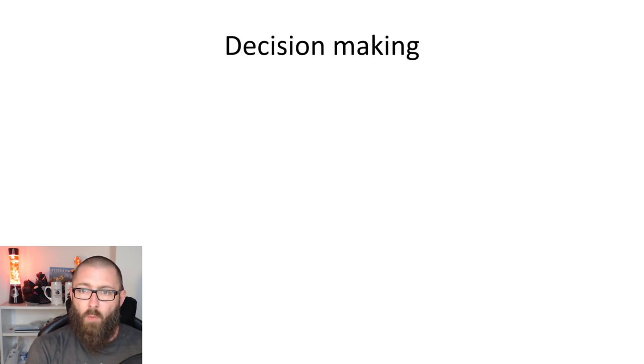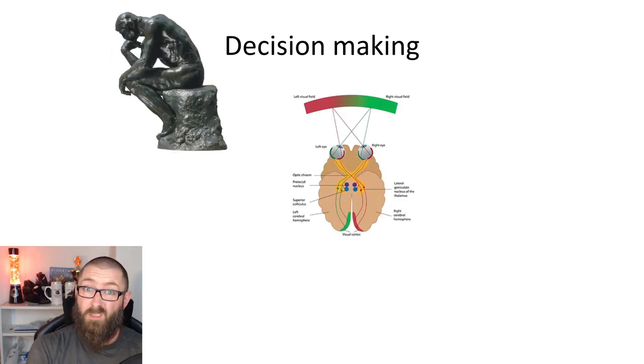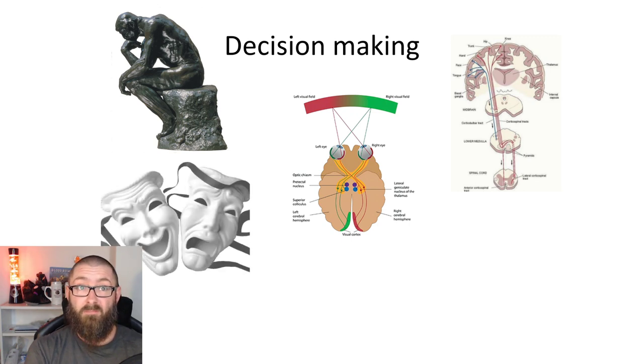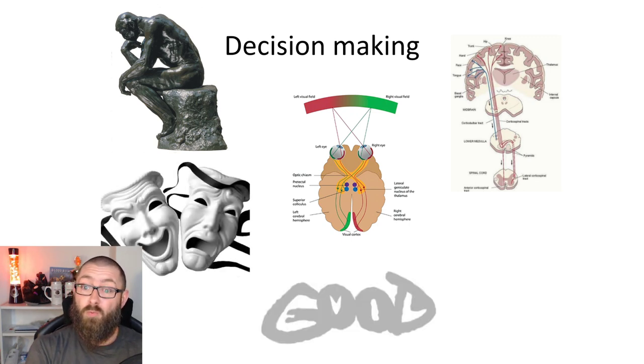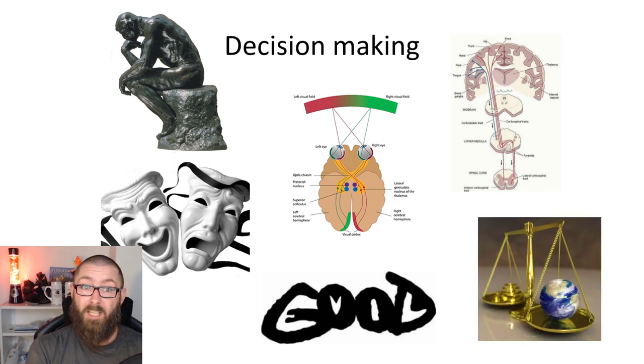So we're going to be talking about decision making. And I'd like you to take a moment to think for yourself, what kind of process is decision making really? Is it a cognitive process or a perceptual one? Is it a motor process, an emotional, a moral process, or a financial one? The answer is all of the above.